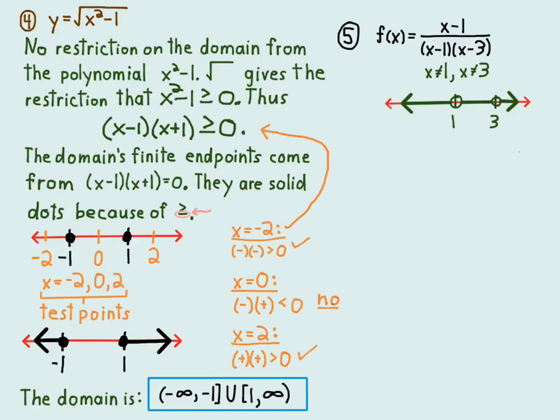So the domain's going to be all real numbers except for one and three. I put in one and three on a number line, make them open dots because x can't be one and it can't be three. Then it can be any other real number because the numerator is a polynomial, the denominator is a polynomial, so those have no restrictions. The only restriction is you can't divide by zero, so all the other numbers work. I don't have to do the testing points like I did with the inequality one with the greater than or equal to zero one in number four.